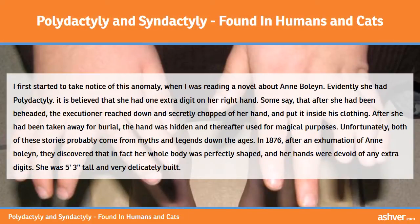I first started to take notice of this anomaly when I was reading a novel about Anne Boleyn. Evidently she had polydactyly. It is believed that she had one extra digit on her right hand. Some say that after she had been beheaded, the executioner reached down and secretly chopped off her hand and put it inside his clothing. After she had been taken away for burial, the hand was hidden and thereafter used for magical purposes. Unfortunately, both of these stories probably come from myths and legends down the ages.